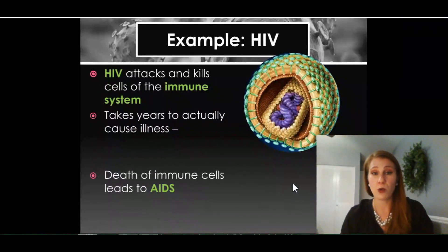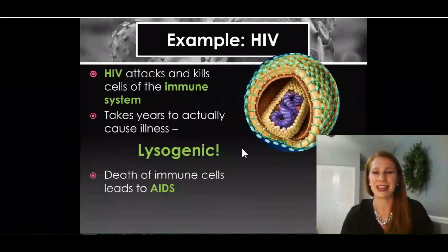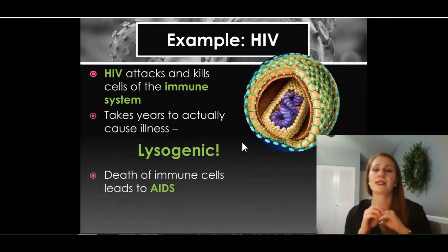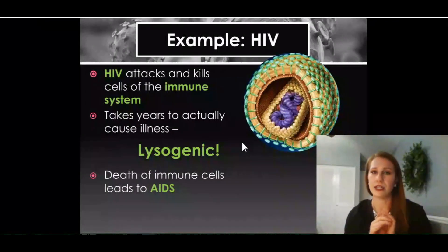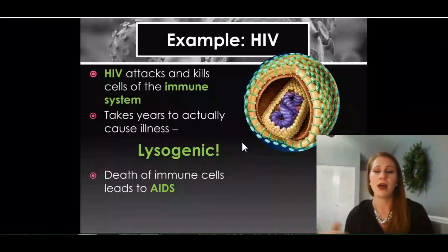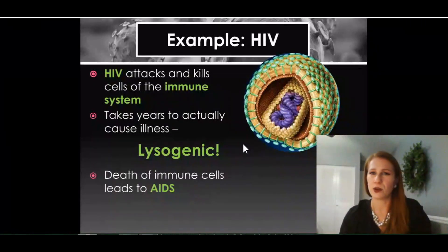It usually works pretty well. This is a lysogenic virus — the key here is lyso equals slow. It takes years to develop, and people probably don't know they have it for a long time. That's why HIV is lysogenic.